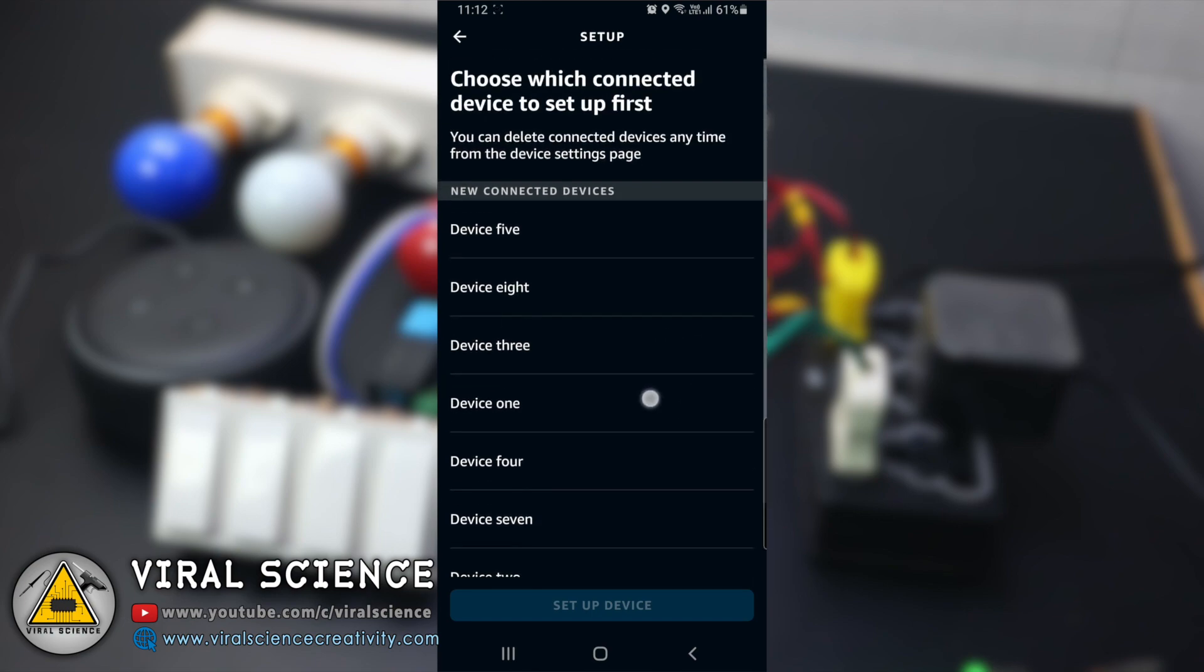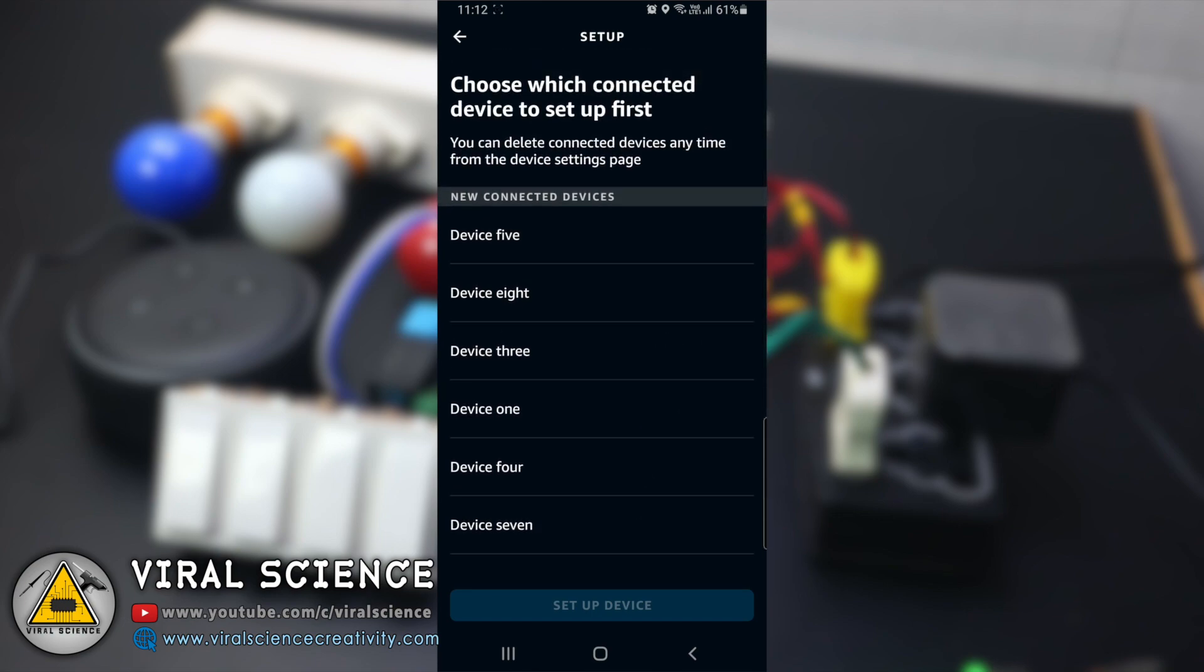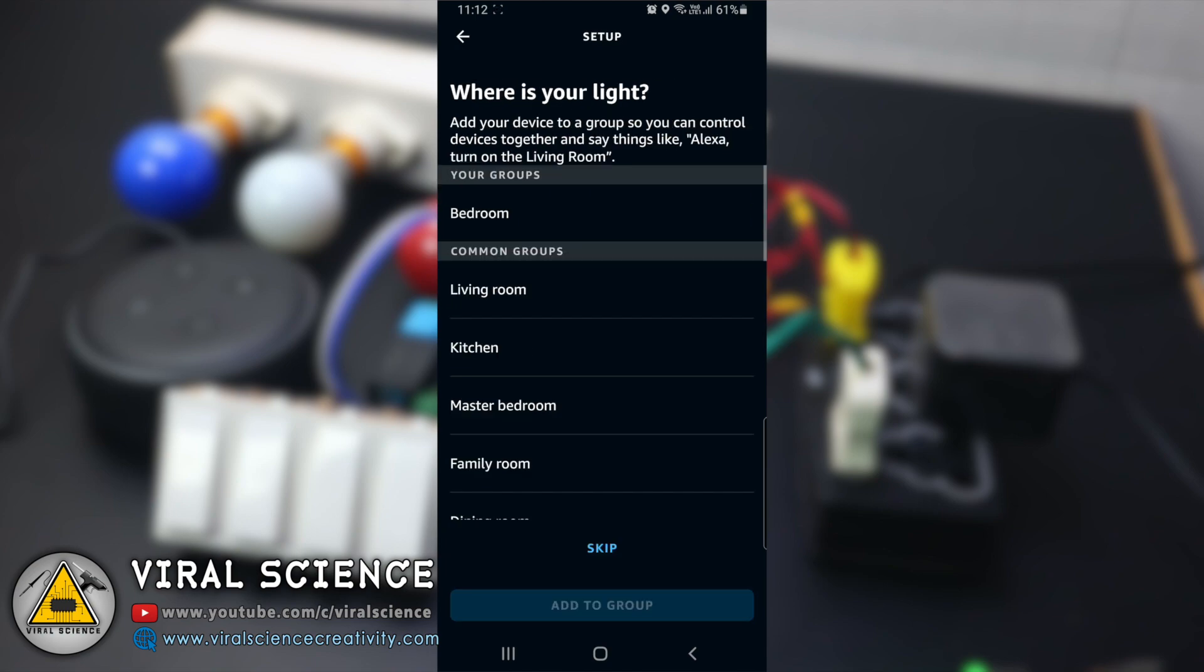After it finds all your devices, click on OK and you can add all these devices to your group. In my case I'll add to my bedroom group.